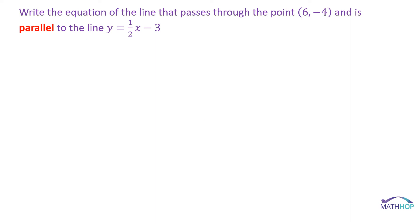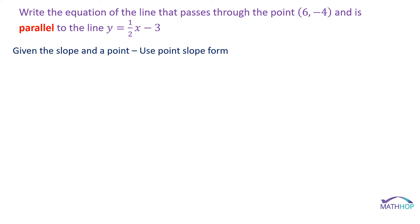The last set of questions are the kind that usually give us the most problems. They want us to write the equation of a line that passes through a point, (6, -4), and is parallel to the line y equals 1/2x minus 3. These problems are essentially asking you to write the equation of a line through a given point with a given slope. They've told you the line is parallel to y equals 1/2x minus 3, so the slope will be 1/2. Given the slope and a point, we're going to use point-slope form.